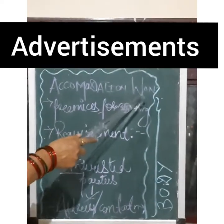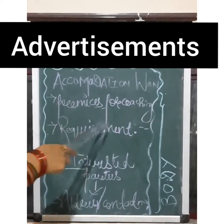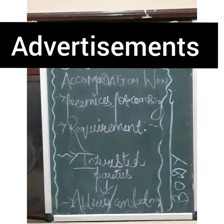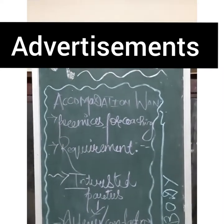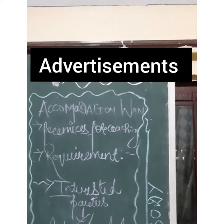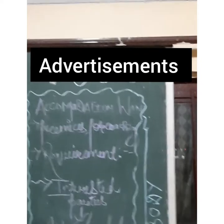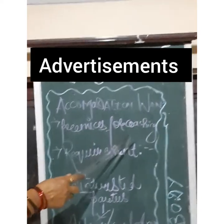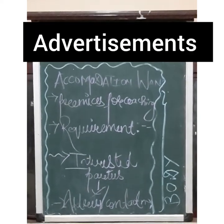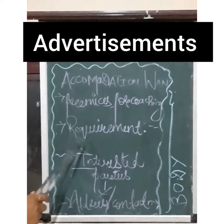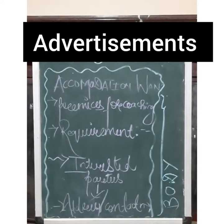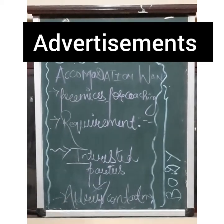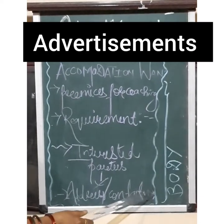Another example is accommodation wanted. The question is: you need a suitable building for computer coaching in Nagpur; draft an advertisement stating your requirement to be published in the accommodation wanted column of a local daily. Caption: ACCOMMODATION WANTED in capital letters. Premises for coaching: wanted a suitable premises for setting up a computer coaching center in the heart of Nagpur. Requirement: our minimum requirement is one large hall and three or four attached or adjoining rooms. Interested parties may contact — then comes your address and phone number.